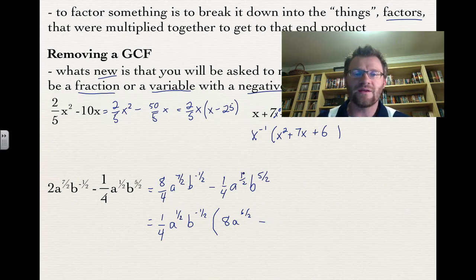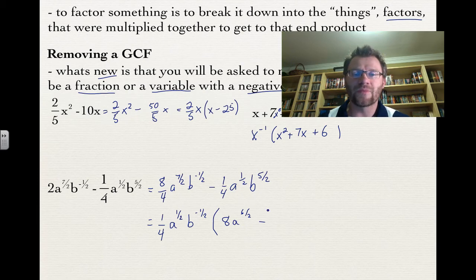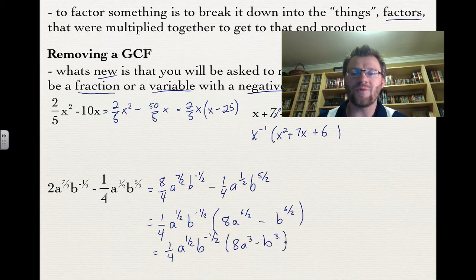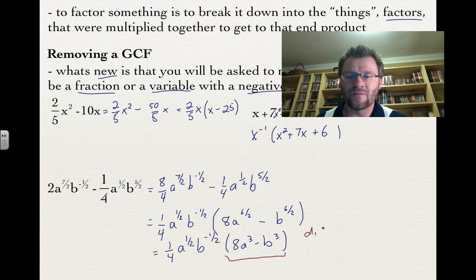Subtracting the second part: we took out the 1/4 leaving 1, we took out a^(1/2) leaving no a's, but we do have b to the 6/2 — because adding negative 1/2 and 6/2 gives 5/2 as the final exponent. So the full factored form is 1/4 · a^(1/2) · b^(-1/2) times (8a³ minus b³). You may recognize that part as a difference of cubes, and we're going to talk about how to factor a difference of cubes in just a moment.